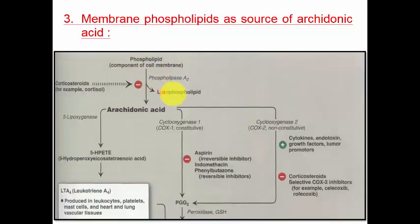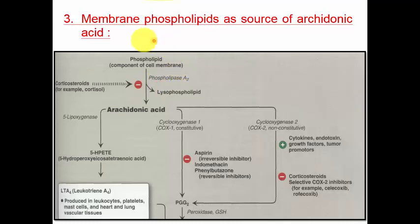Phospholipids are degraded by phospholipase, which forms arachidonic acid - one of the essential fatty acids. This is very useful for the synthesis of various prostaglandins and leukotrienes. So phospholipids are useful for the synthesis of arachidonic acid and thereby prostaglandins and leukotrienes.